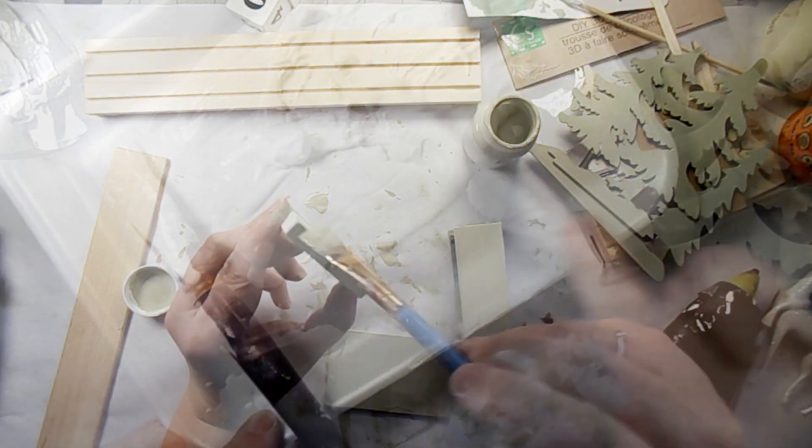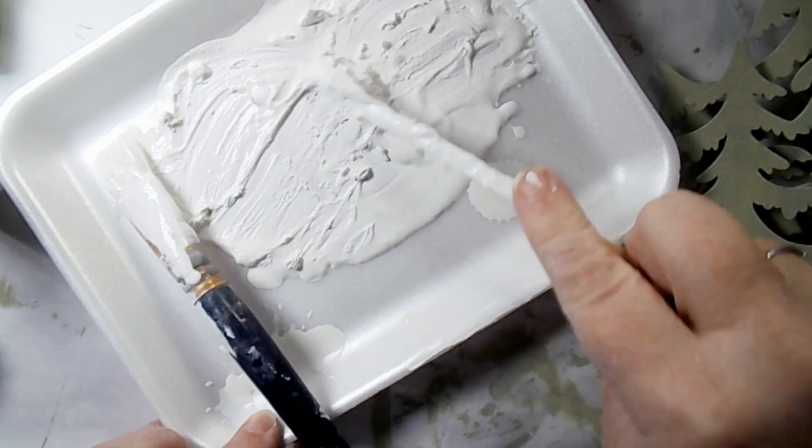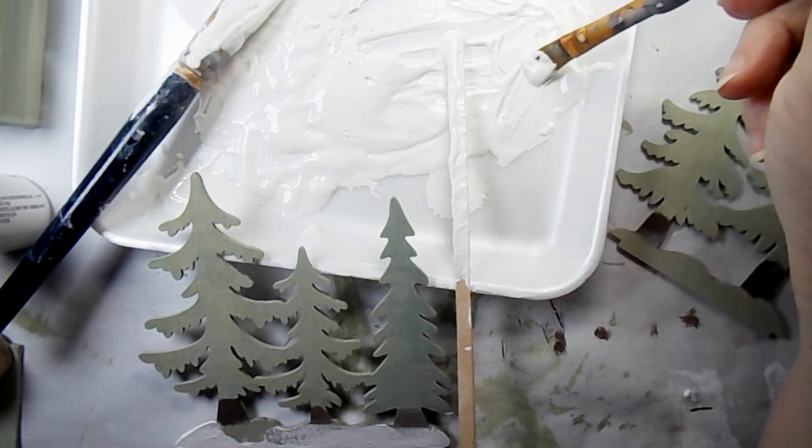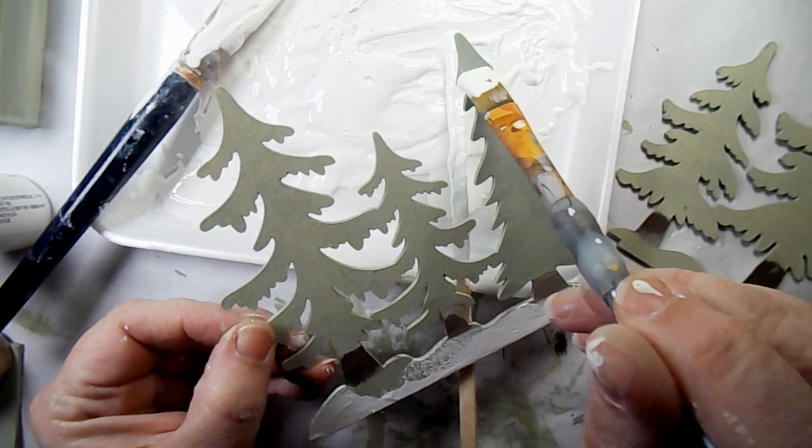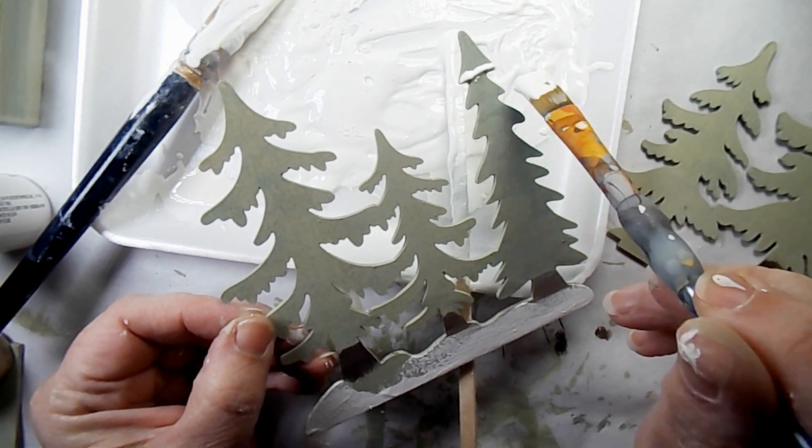I won't be using the months. All I'm going to do is use the numbers. Now, I took some of my white acrylic paint and I mixed it with some baking soda. This is going to be my snow.